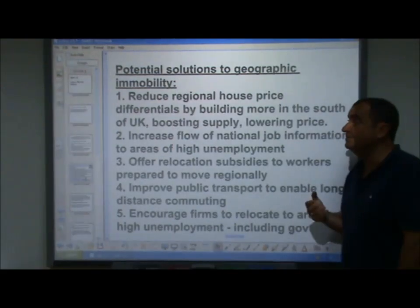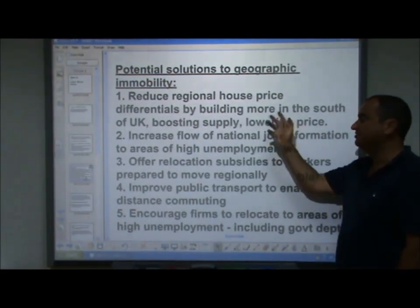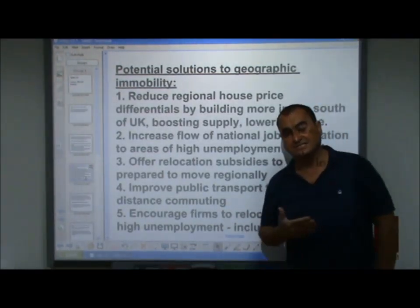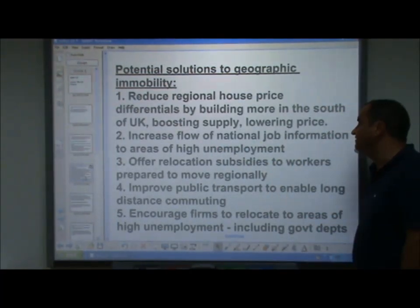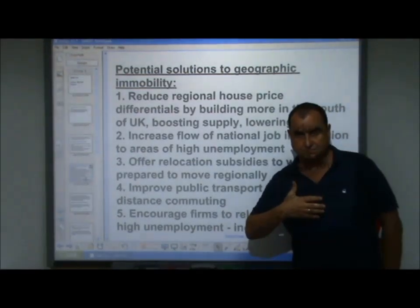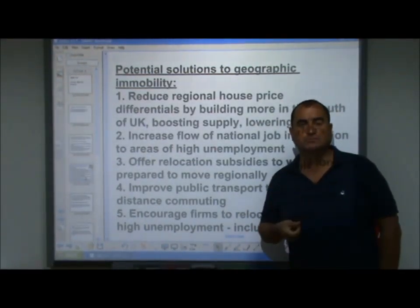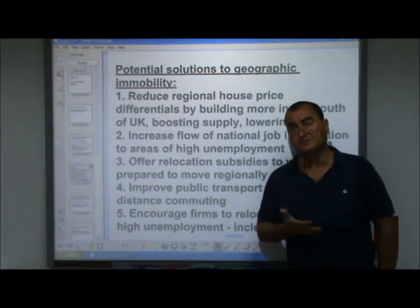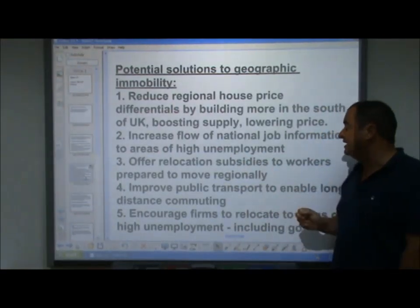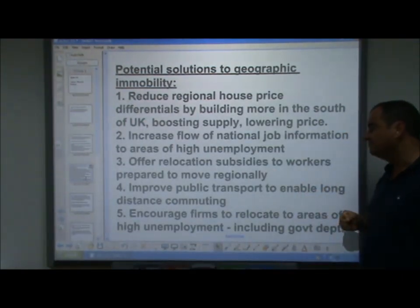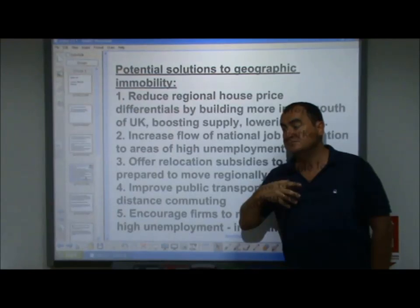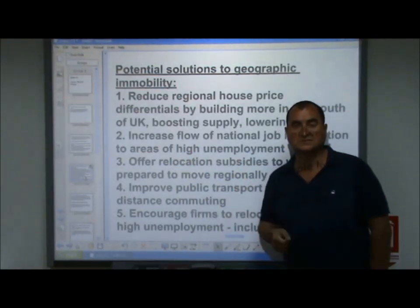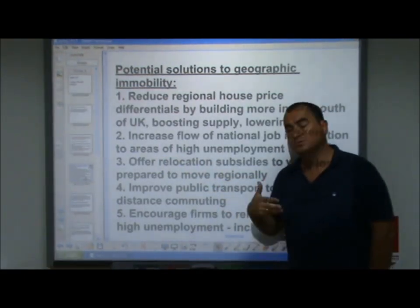Potential solutions to geographic immobility include: first, reducing regional house price differentials by building more in the south to boost supply and lower prices. Second, increasing the flow of national job information to areas of high unemployment — perhaps through local job centres and job shops having more information about jobs further afield, and utilising the internet to spread information about job availability. Third, offering relocation subsidies to workers prepared to move regionally. Fourth, improving public transport to enable longer distance commuting, and possibly subsidising fares so people can travel further and make themselves available over a larger area.